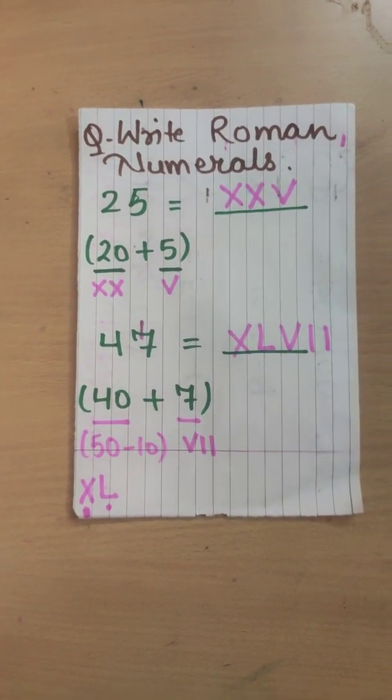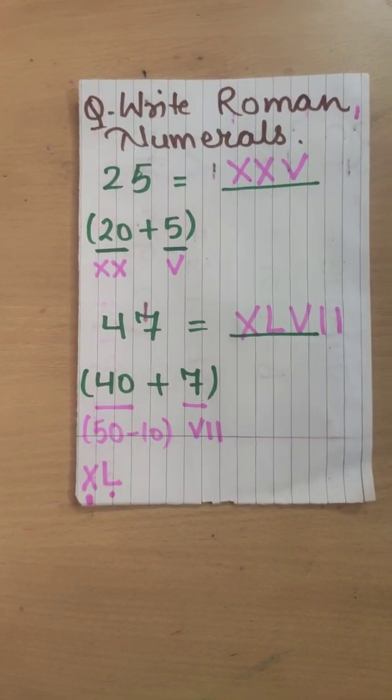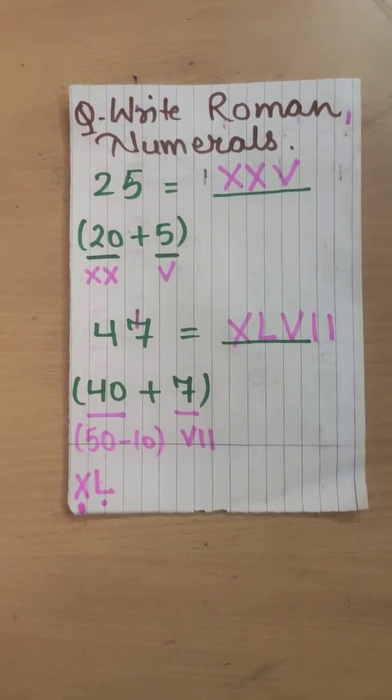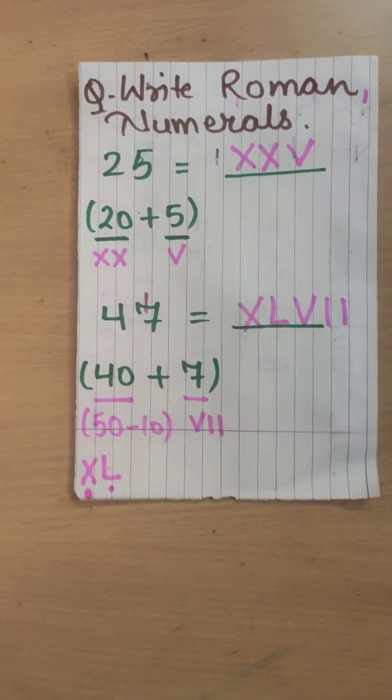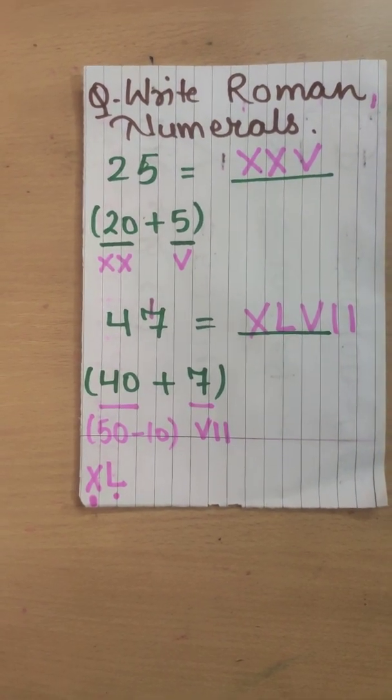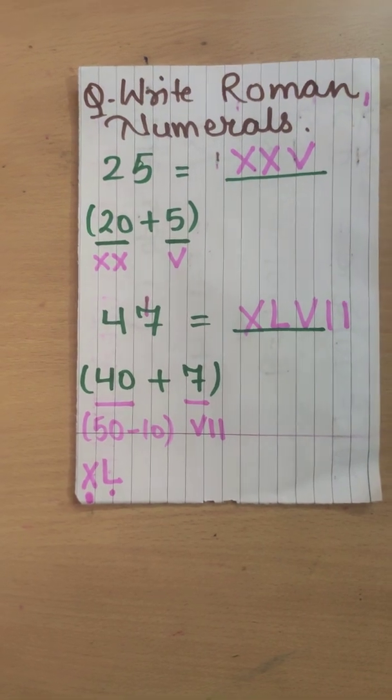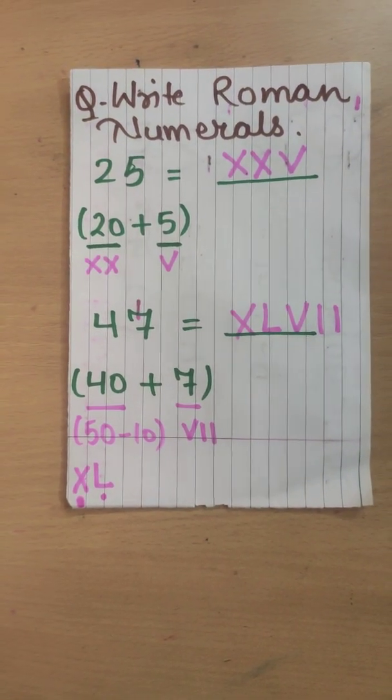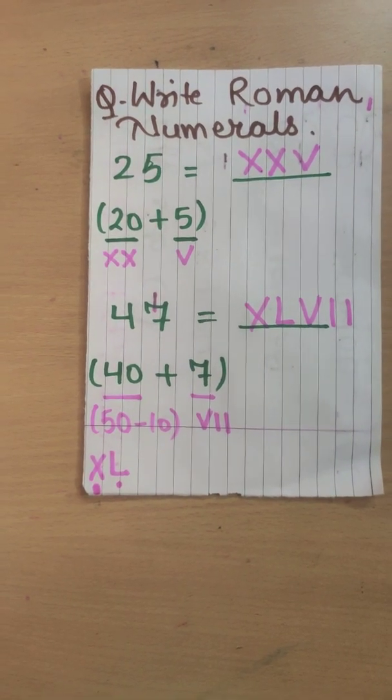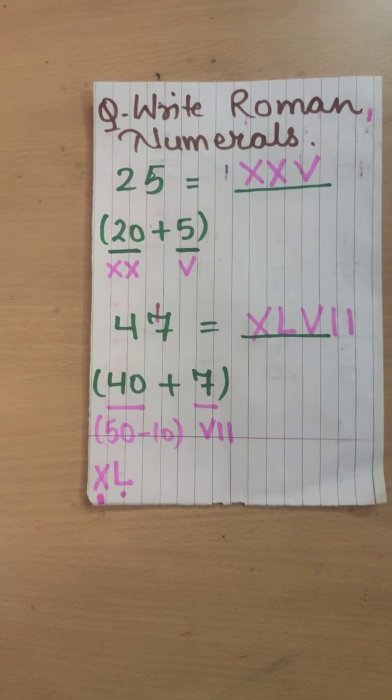Because as we have studied in our rules, any symbol can be repeated maximum three times, not four times. This was the wrong way to write 40. We will take the help of 50 as it is 50 minus 10. First we will write 50, L, minus means left side. Left side, 10, X. First we will write L, then left side of it, X. XL is the way how to write 40.